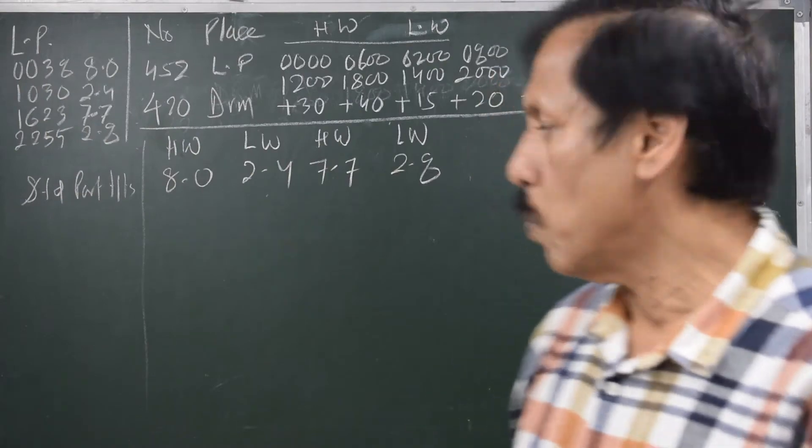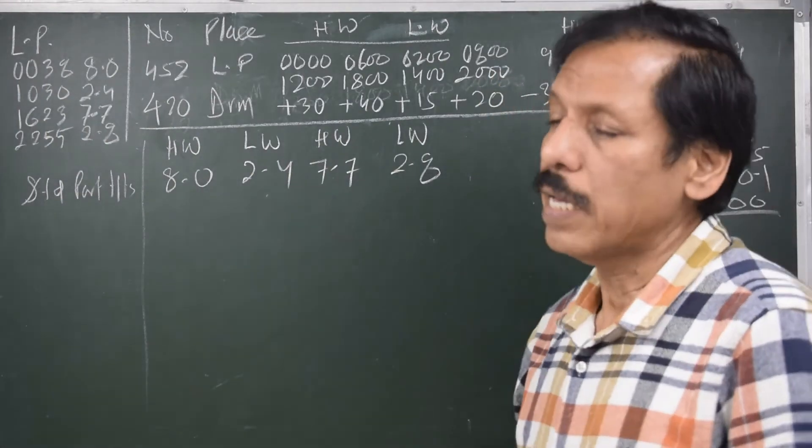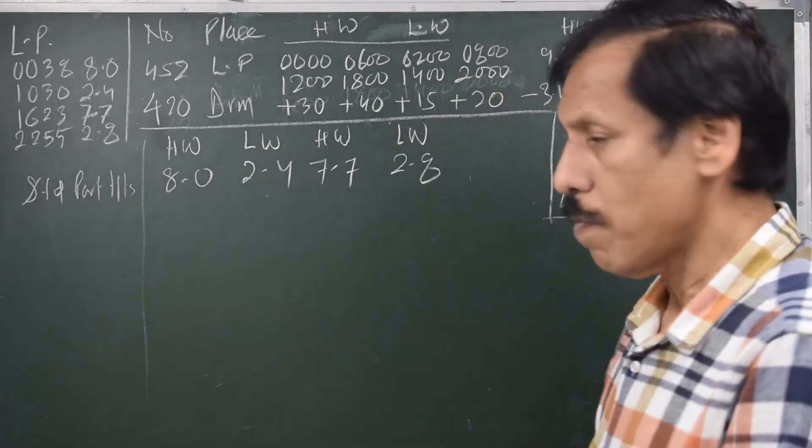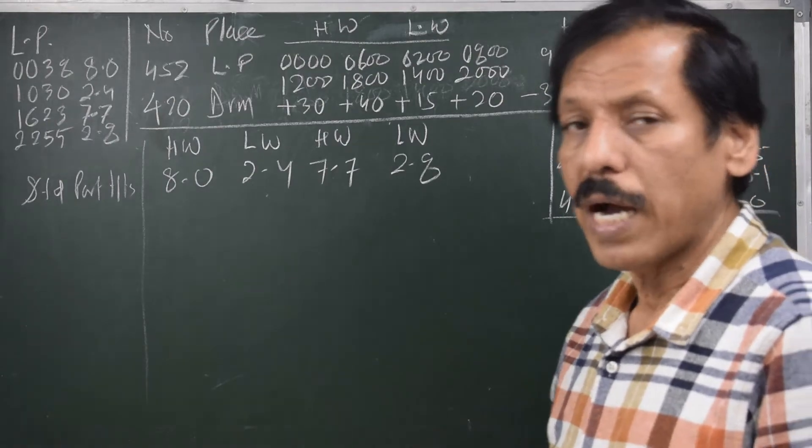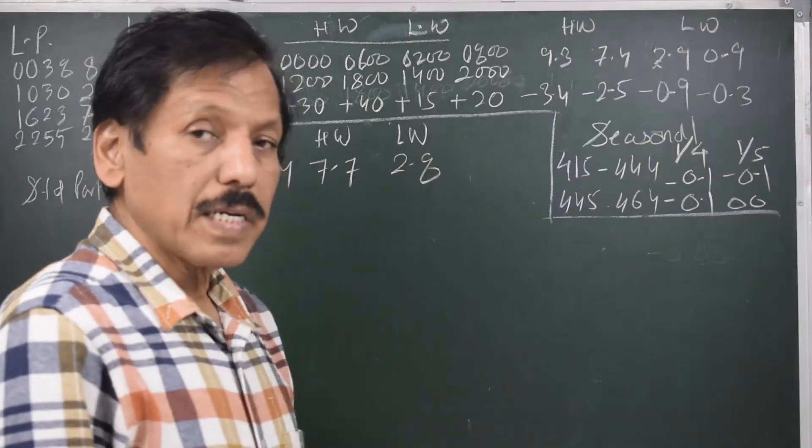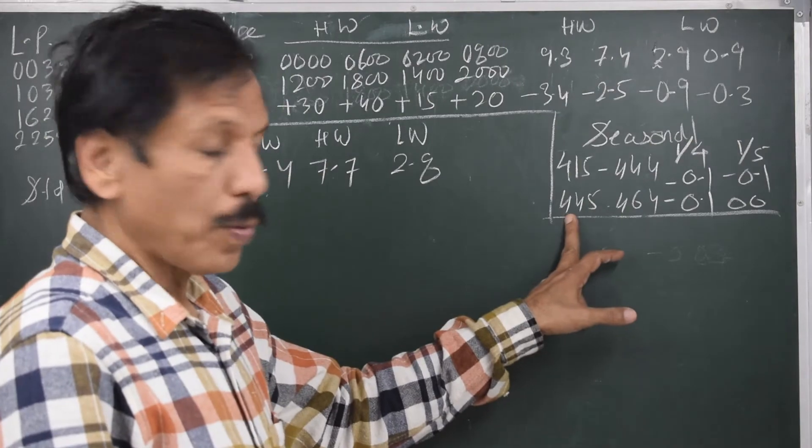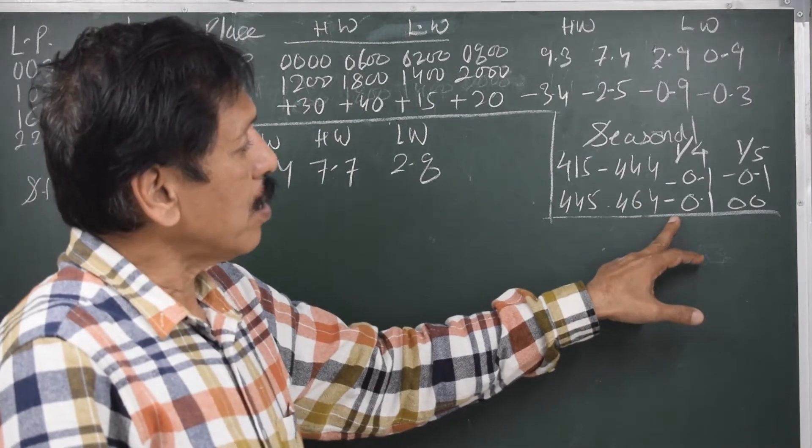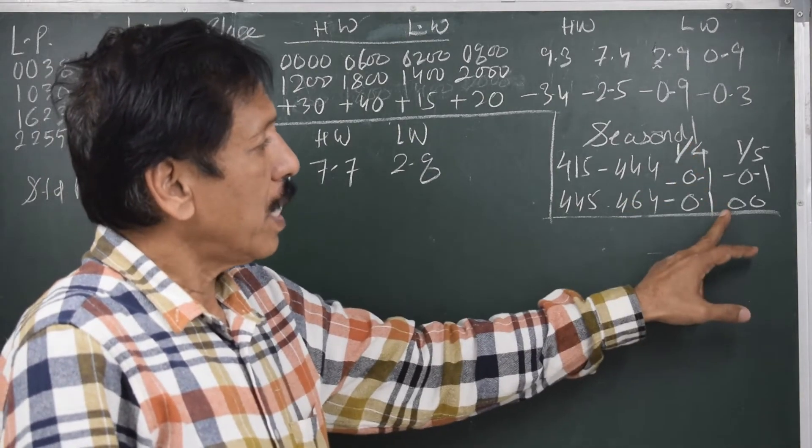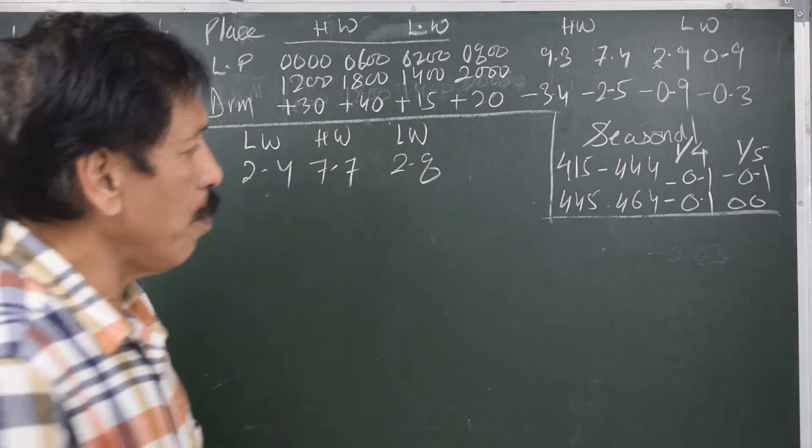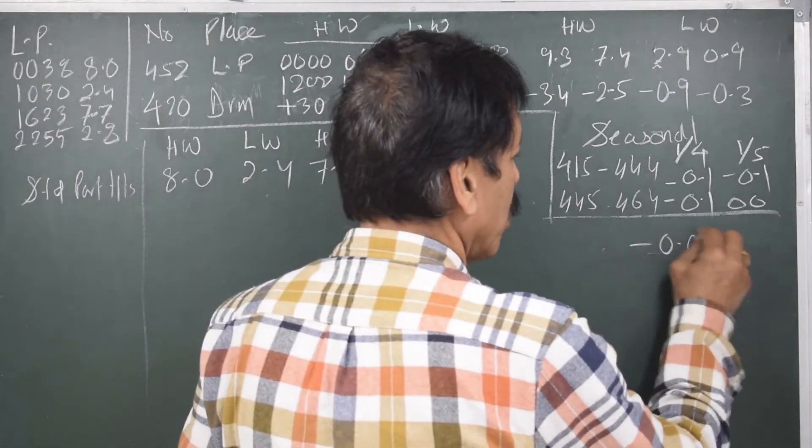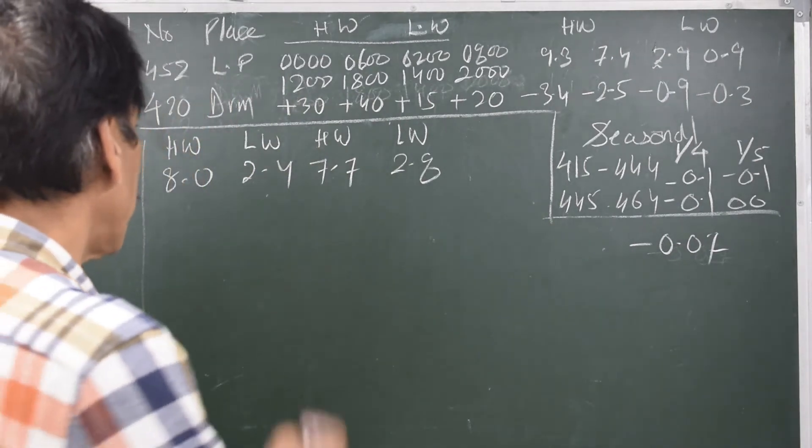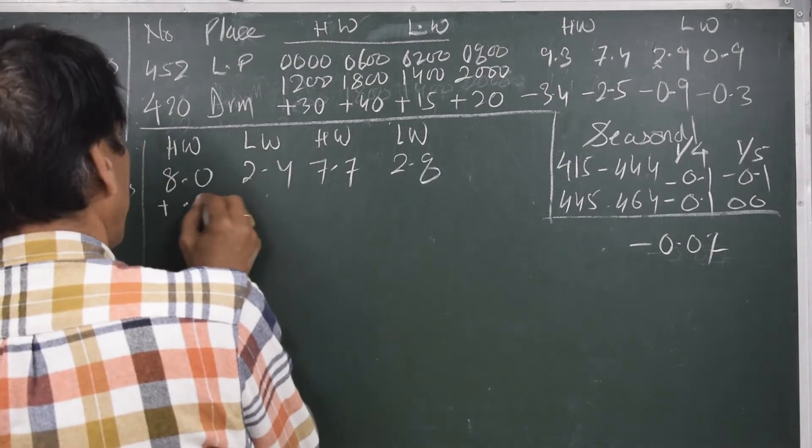Now the first correction that I do is I change the sign and apply the seasonal correction. I call it negativing of seasonal correction. Whatever is seasonal correction I want to negative. The idea is I want to have the raw height. The seasonal correction which is given for the ports between 445 and 464, Liverpool comes there. The correction is minus 0.1 on the 1st of April, nil on the 1st of May. So probably on the 10th of April we may say that the correction is minus 0.07, and we reverse the correction. That means we change the sign and apply it everywhere.